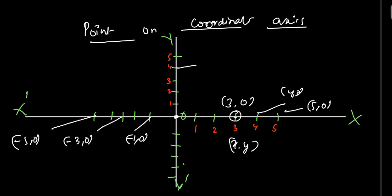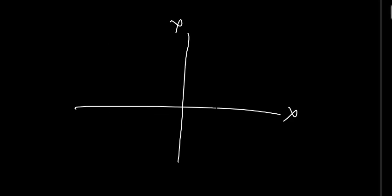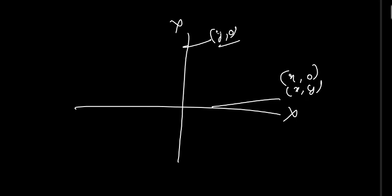So: on the X axis, Y coordinate is 0, giving coordinates (X, 0). On the Y axis, X coordinate is 0, giving coordinates (0, Y). This is the way you find the coordinates on the axis — whether it may be on the X axis or the Y axis.